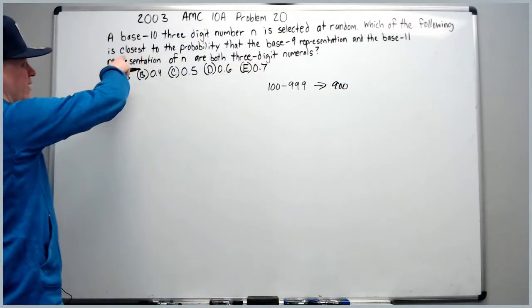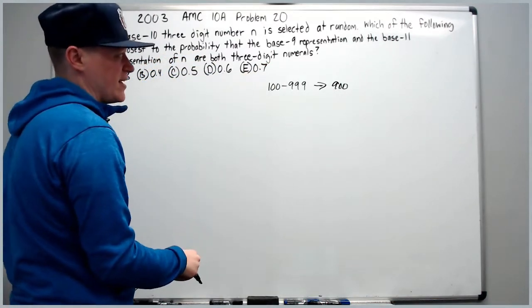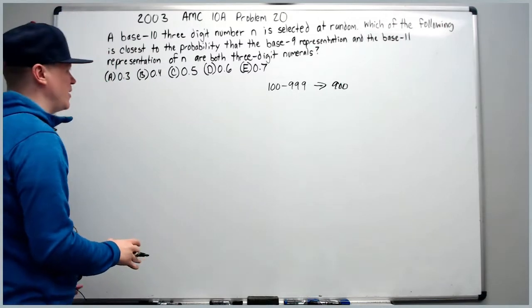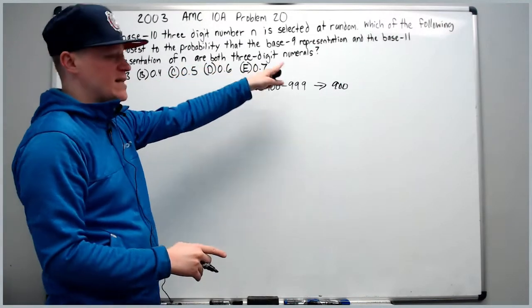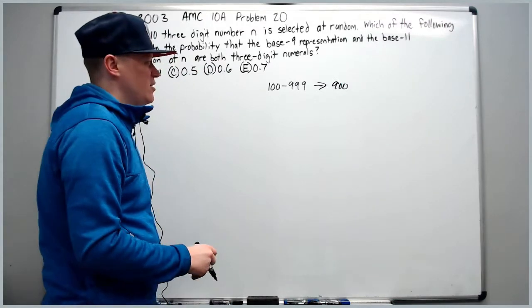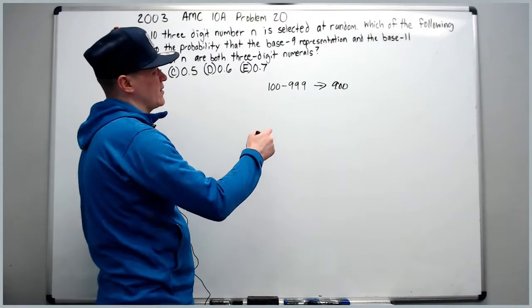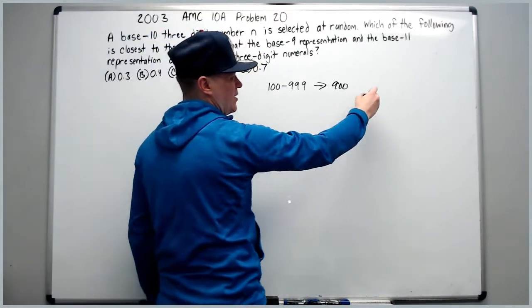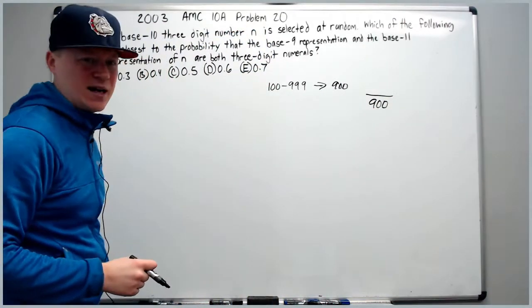Which of the following is closest to the probability that the base 9 representation and the base 11 representation of N are both three digit numerals? So where do you begin with this? We can start with, we're picking a number out of these 900, therefore the denominator is something out of 900.